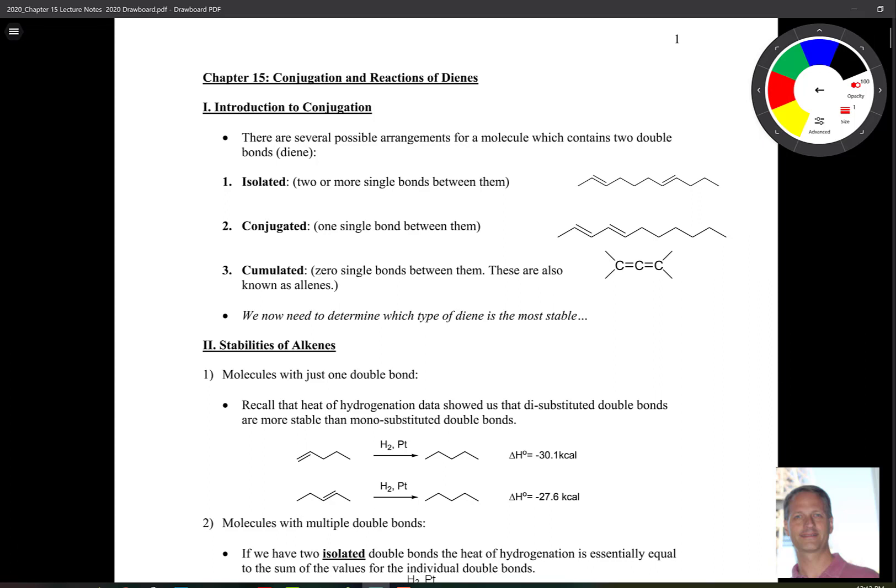The first one is called isolated. An isolated double bond is when we have two or more single bonds between the double bonds. So here we have a double bond, both atoms here sp2 hybridized. But between the double bond and the other double bond, we have atoms that are sp3 hybridized. So all of these are sp3. They're isolated because the double bonds are separated by a single bond.